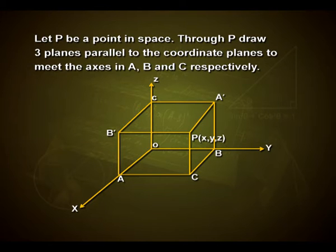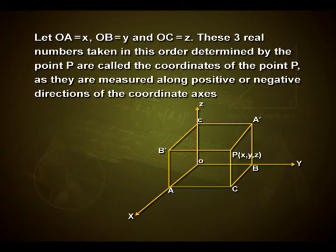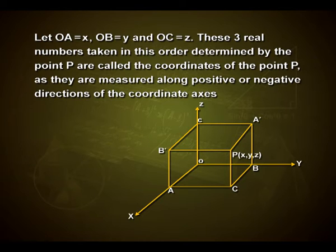Now let P be a point in space. Through P, draw three planes parallel to the coordinate planes to meet the axes at A, B and C respectively. Let OA equal x, OB equal y, and OC equal z. These three real numbers taken in this order, determined by the point P, are called the coordinates of P, as they are measured along positive or negative directions of the coordinate axes. On the monitor, we have the x-axis, y-axis, and z-axis perpendicular to both x and y, with points A, B, C and A', C', B' respectively, with O as the origin.